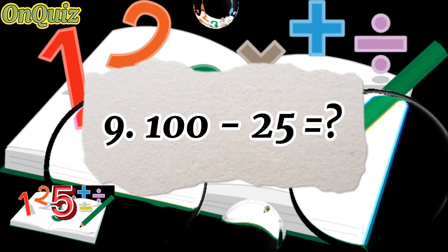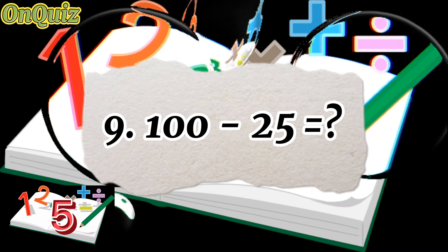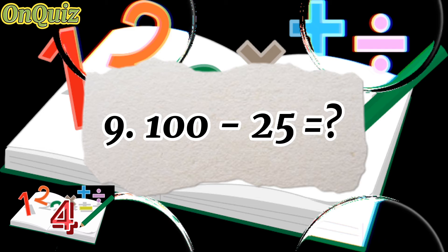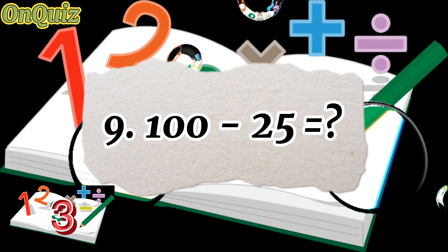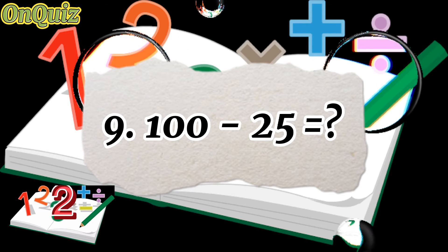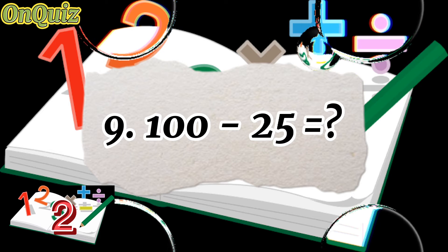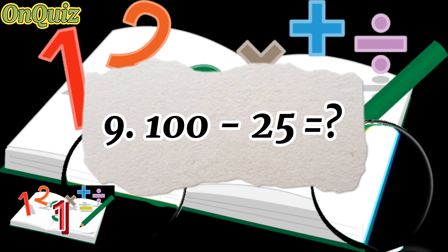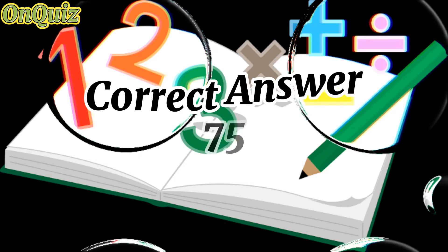Question 9. 100 minus 25 equals. Correct answer: 75.